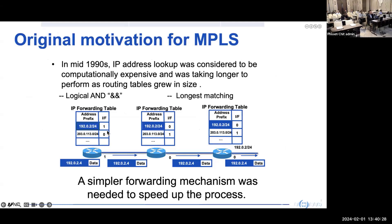The initial motivation for MPLS was back in the mid-1990s. At that time, standard IP routing — which looks up the destination address against an IP forwarding table using the longest prefix match — was considered more complex and time-consuming. The processing power of that era was not powerful enough for routers forwarding millions of packets. The idea of label switching emerged: if we can forward packets with a simpler header that doesn't require longest-match lookup, it would greatly improve performance.